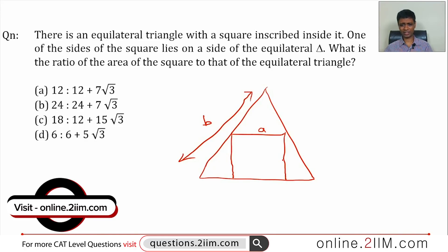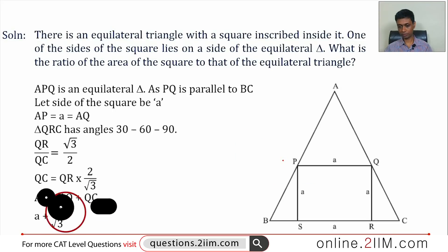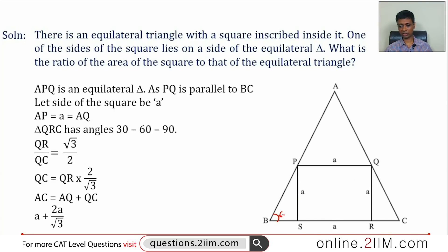I am going to go ahead and start with the digital diagram. So this is an equilateral triangle with vertices labeled, and inside it we have a square with side a. The angle at the base of the equilateral triangle is 60 degrees, and the corners of the square give 90 degree angles. The small triangle formed — say triangle P, B, S — is a 30-60-90 triangle.